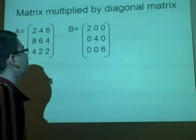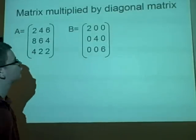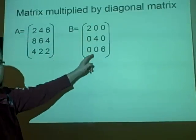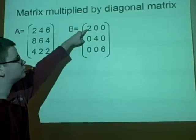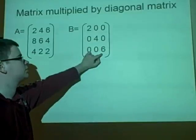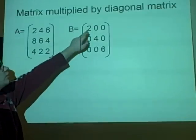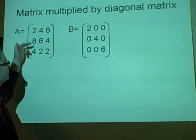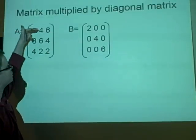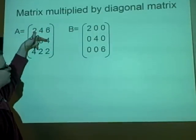Now if we were to multiply a matrix by a diagonal matrix, all we do is multiply the columns by the value that is in the column. In the first column we have the value 2, in the second column we have the value 4, in the third column we have the value 6. So it times all the values in the first column of A times the value in the first column of B. So we have 2 times 2 is 4, 16, 8, 16, 24, 8, 36, 24, 12.